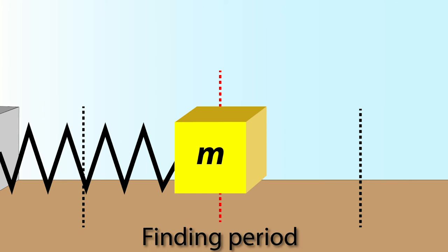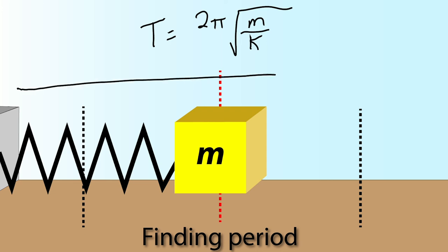When it comes to finding period, there's no real theory to it. There's just basically a set equation you're going to use. The period of a mass spring system is equal to 2 pi times the square root of m over k. The period is the amount of time it takes for the mass to go all the way to one side and come all the way back, the time for one full back-and-forth movement.